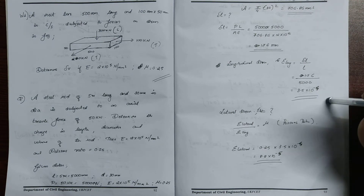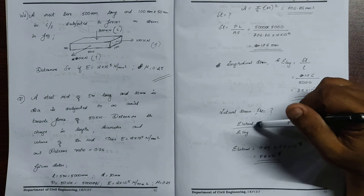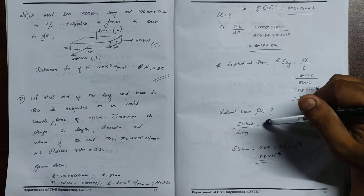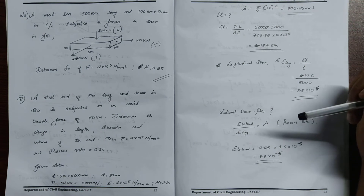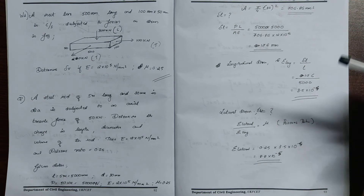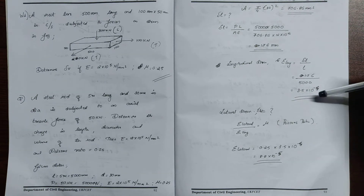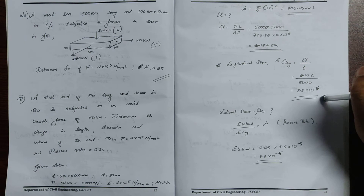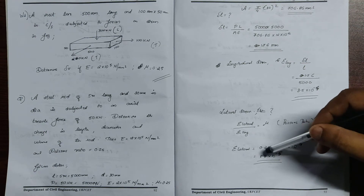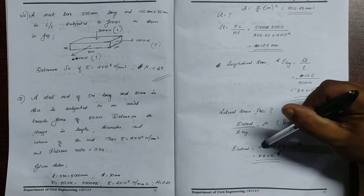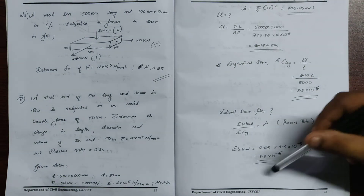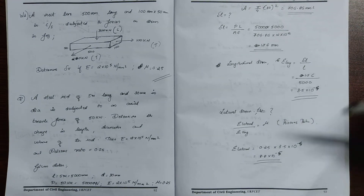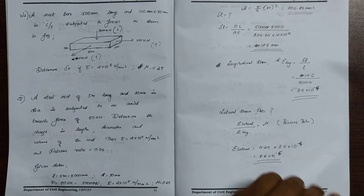Longitudinal strain equals 1.76 divided by 5000, which equals 3.5 into 10 to the power minus 4. Now lateral strain can be found using the basic equation: Poisson's ratio equals lateral strain divided by longitudinal strain. Therefore lateral strain equals Poisson's ratio 0.25 into longitudinal strain 3.5 into 10 to the power minus 4, giving lateral strain equal to 8.8 into 10 to the power minus 5.